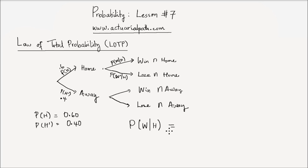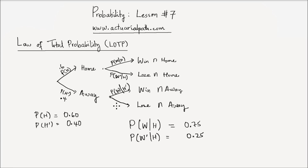Let's say the probability of winning given at home is 75%. So immediately you realize that the probability of losing given they played at home is 25%. On this branch, I would write the probability of winning given that the team played away — away is H complement. And on this branch I would have the probability of losing, W complement, given that they played away, H complement. Suppose also that the probability of winning given that the team played away is equal to 45%.